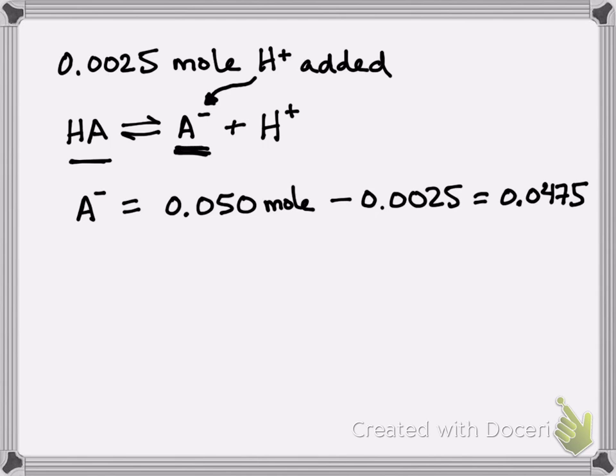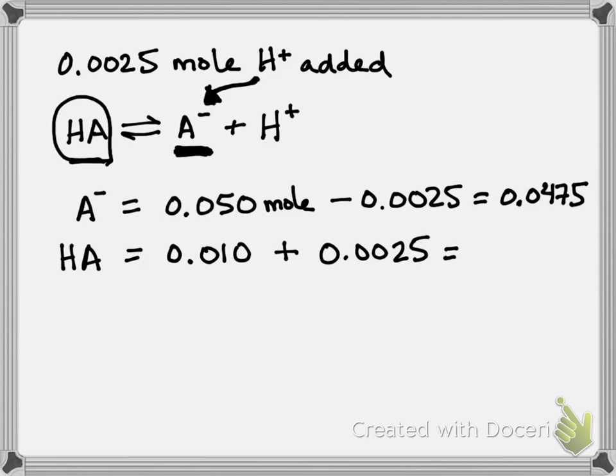That's because some of this A- linked up with the protons you added and made more of the acid form. So to now know your true amount of acid form, you take what you started off with, 0.010, and you add the amount that got made, 0.0025. And you end up with 0.0125 moles.